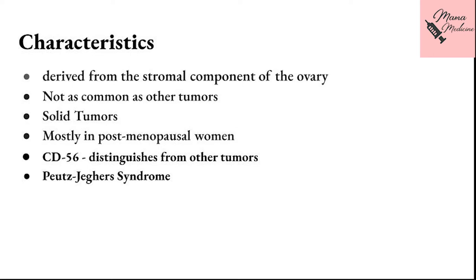The general characteristics of sex cord stromal tumors: number one, they are derived from the stromal component — the granulosa cells, theca cells, and fibroblasts. Number two, they are not as common as other tumors. Number three, they are mostly solid tumors. Number four, they are mostly present in postmenopausal women. CT56 is said to distinguish sex cord stromal tumors from other tumors, but it is not very useful since it cannot distinguish them from neuroendocrine tumors. People suffering from Peutz-Jeghers syndrome are associated with an increased risk of developing sex cord stromal tumors.